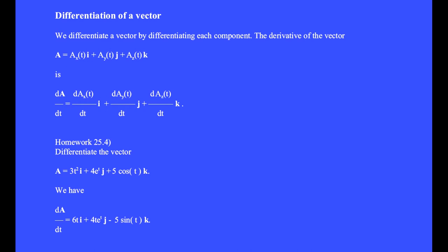We write the time derivative of vector a is equal to the time derivative of the x component times i hat plus the time derivative of the y component of a times j hat plus the time derivative of the z component times k hat.